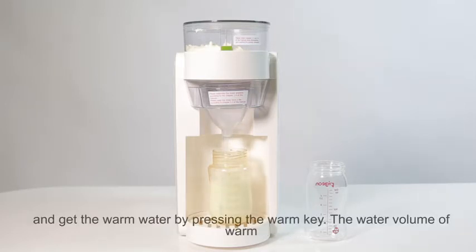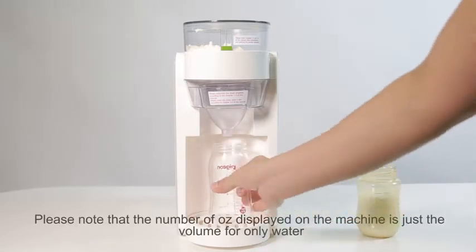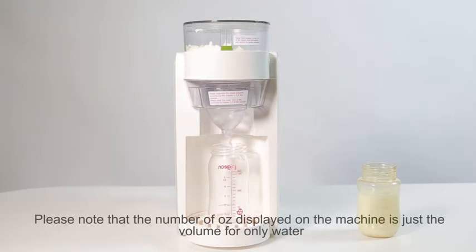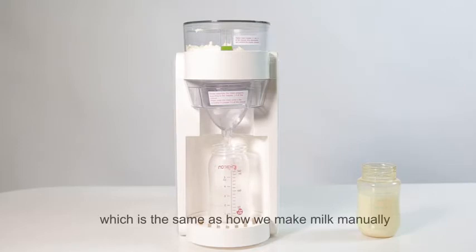The water volume of warm key and make key is always linked and the same. Please note that the number of ounces displayed on the machine is just the volume for only water. Mixed with the milk powder will exceed the set volume, which is the same as how we make milk manually.